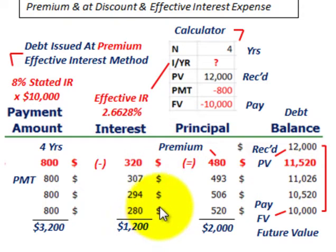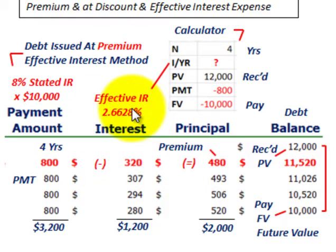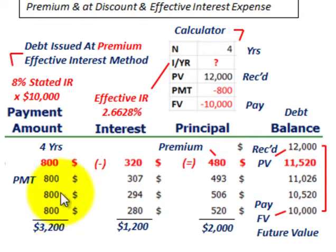Just remember to put these numbers into your calculator: the present value, the payments that have to be paid, and what has to be paid back in the future, plus the number of years. Remember, you have to match your interest rate per period to the amount of the cash payment per period. If payments are semi-annual, you'd figure out what you're paying semi-annually on the loan, and your interest expense would also be on a semi-annual basis.